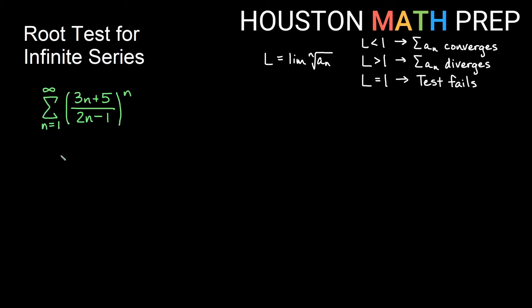Looking here, we have the sum from 1 to infinity of (3n + 5)/(2n - 1) all to the n. And I have the power of n here, so that makes this a nice candidate for the root test. So we go ahead and look at my limit of the nth root of this.